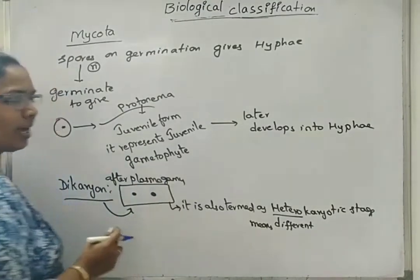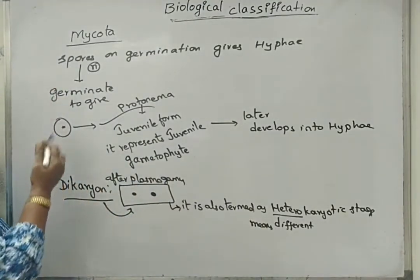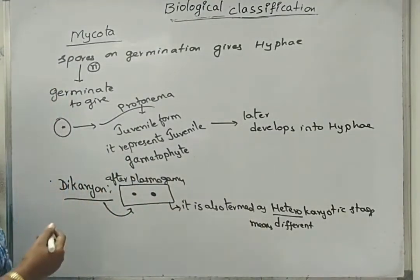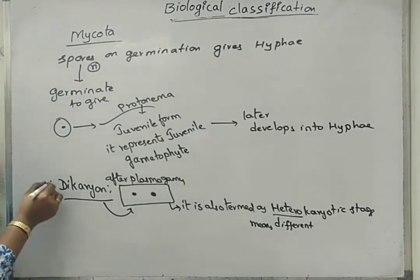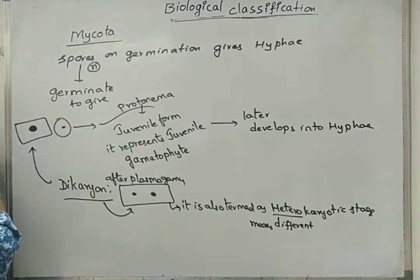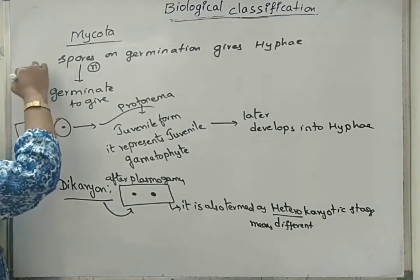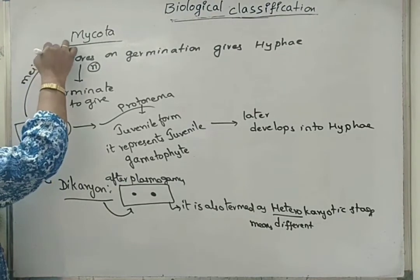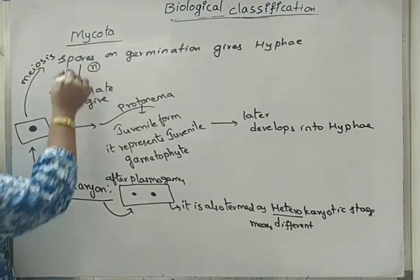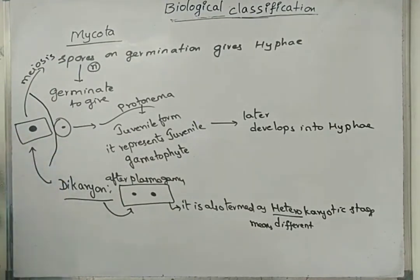Later, this protonema develops into hyphae. From the dikaryotic stage, karyogamy happens — one single nucleus, means a zygote-like structure. Later it will undergo meiosis and forms spores. Those spores on germination again give rise to these types of structures.